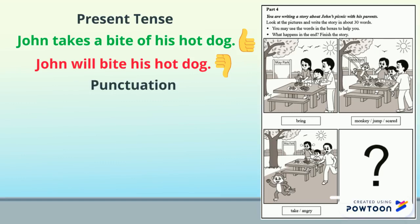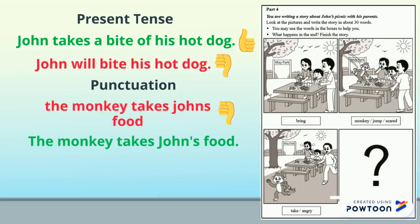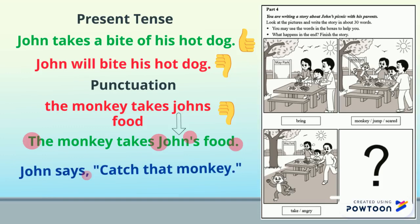Remember your punctuation. The sentence 'the monkey takes John's food' — there is no capital letter at the beginning and no full stop. There is also not a capital letter for his name or an apostrophe showing that the food belongs to John. And finally, when someone speaks, you have to make sure you have your comma and your inverted commas.